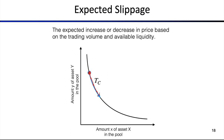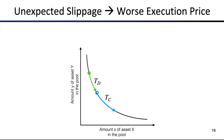Expected slippage is defined as the increase or decrease in price based on trading volume and available liquidity. The more liquidity the pool holds and the smaller the trade you execute, the smaller the expected slippage. This is called 'expected' because you can calculate it — based on the pool state, you can estimate how much slippage you will get.